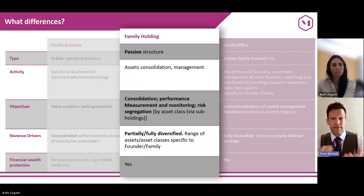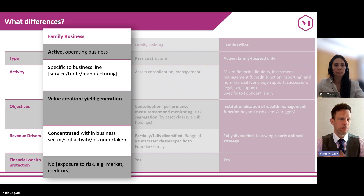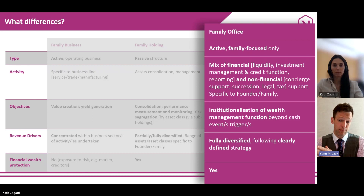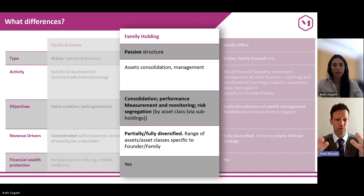Then you have another difference, which is the activity that each concept will undertake. A family business may have a wide range of different business lines — you can pick service, trade, manufacturing, whatever. The activity of an SFO will also be something, but slightly different. The family office is likely to be focused on a selected menu of services — mostly financial and/or para-financial — and strictly provided to the family. The holding, as a passive entity, is likely to purely focus on consolidation, monitoring, and generally ancillary management of these underlying assets.